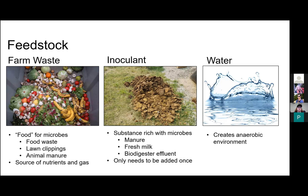Feedstock — the food for the microbes — includes farm waste, food waste, lawn clippings, chaff, and animal manure. You also need an inoculant: some substance rich with helpful microbes to introduce that microbial environment into your biodigester — this can be manure, fresh unpasteurized milk, or effluent from an already-operational biodigester, and it only needs to be added once at the beginning. Water helps create the anaerobic environment and serves as the medium in which everything takes place.